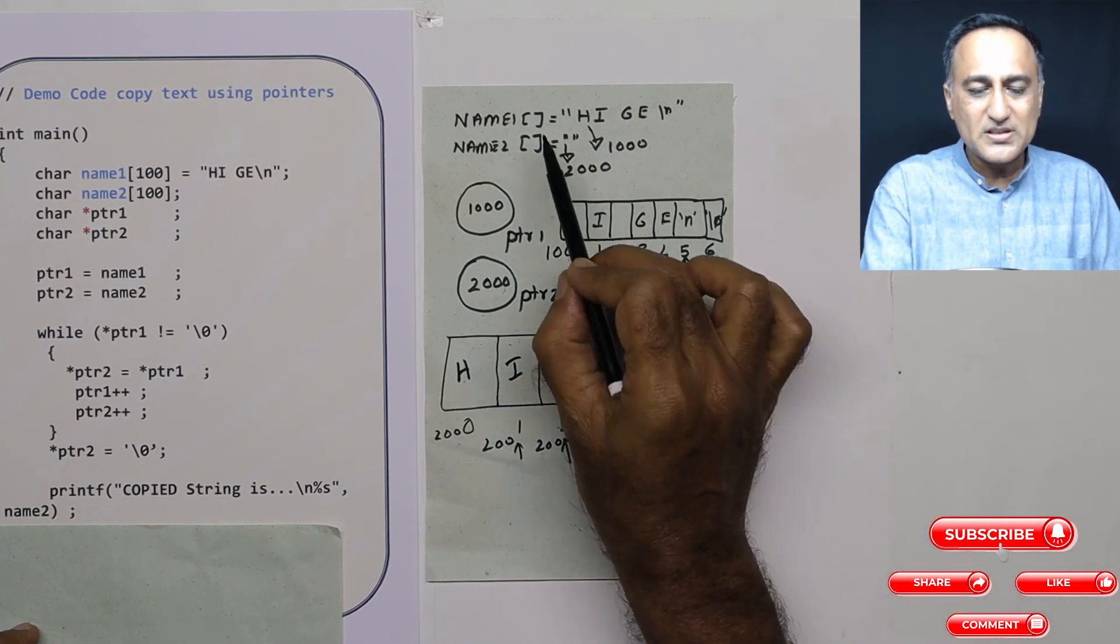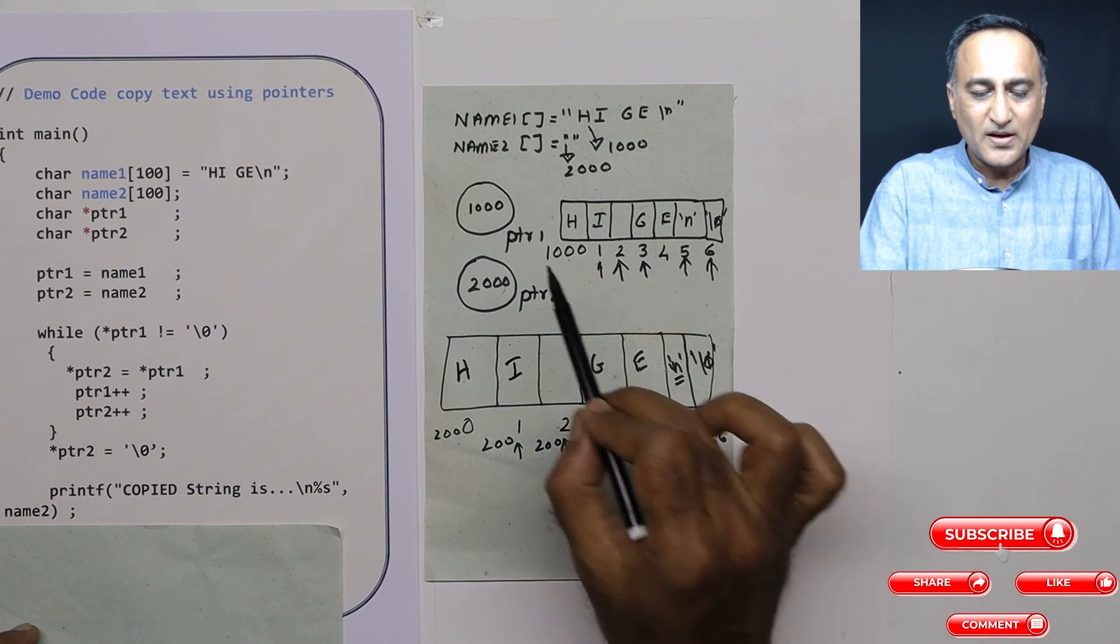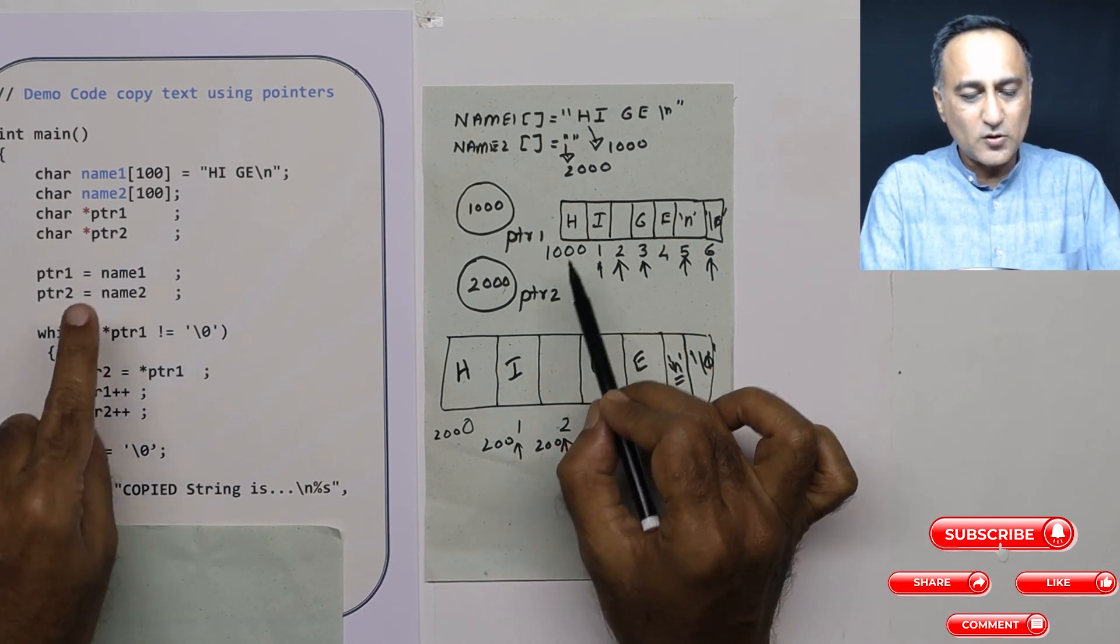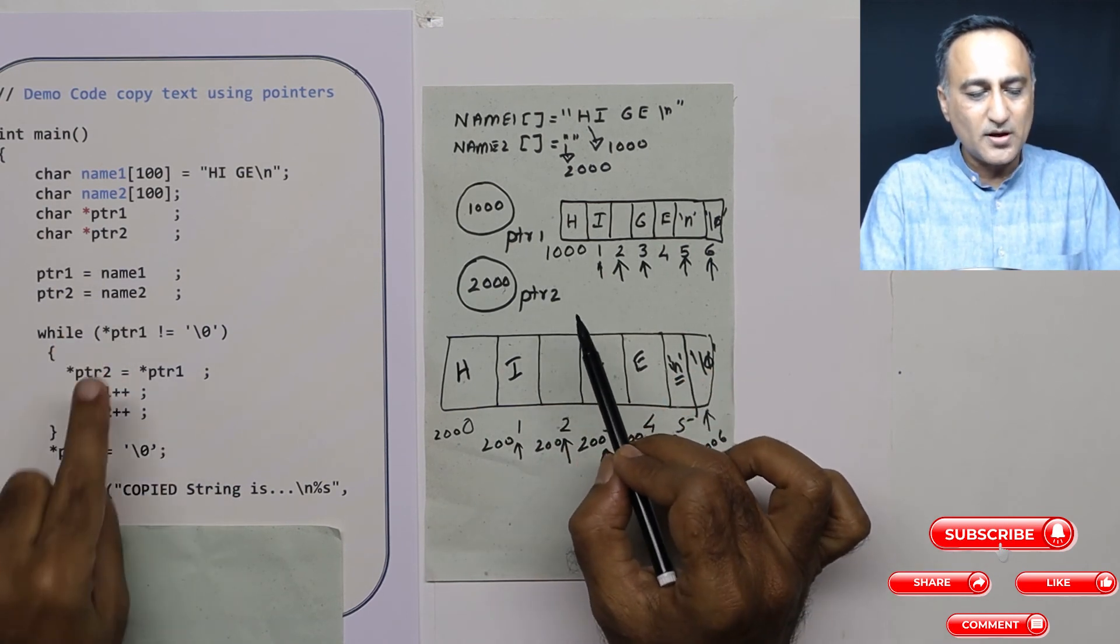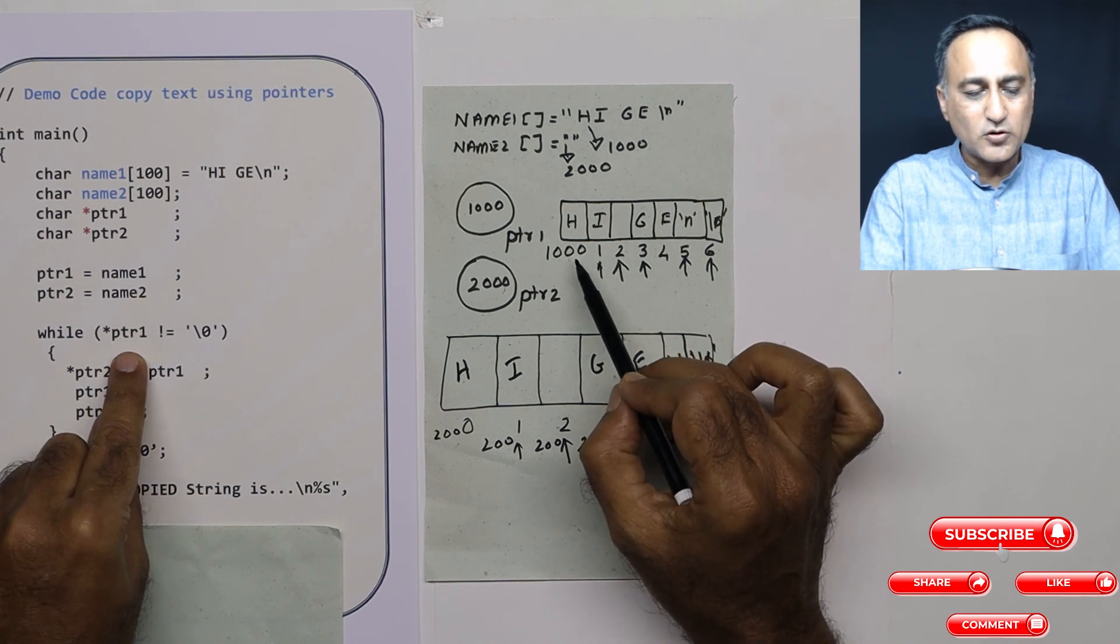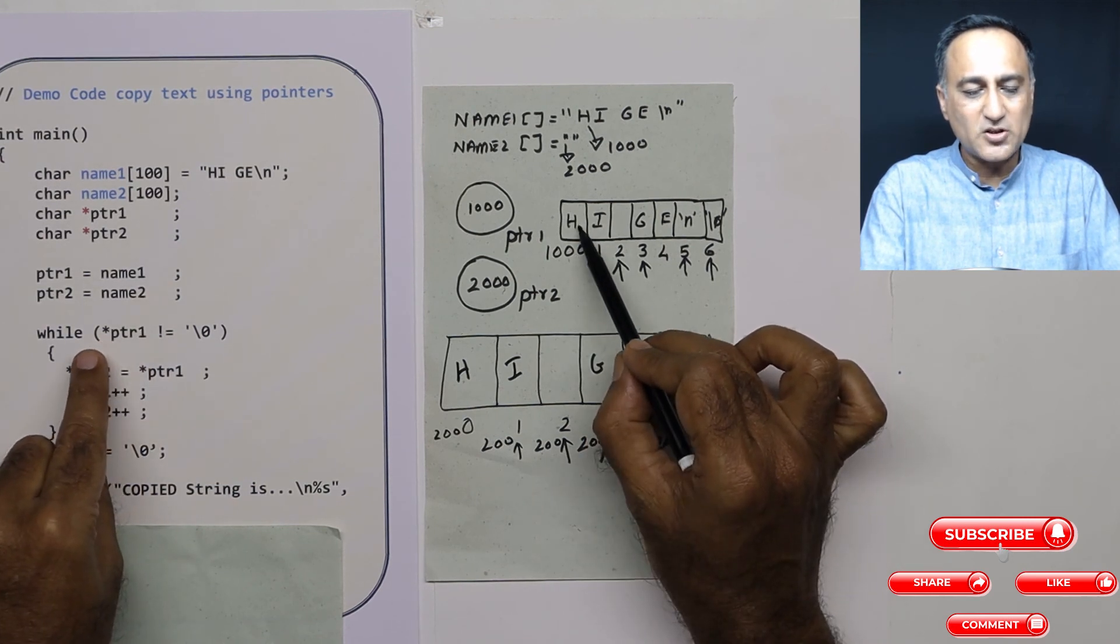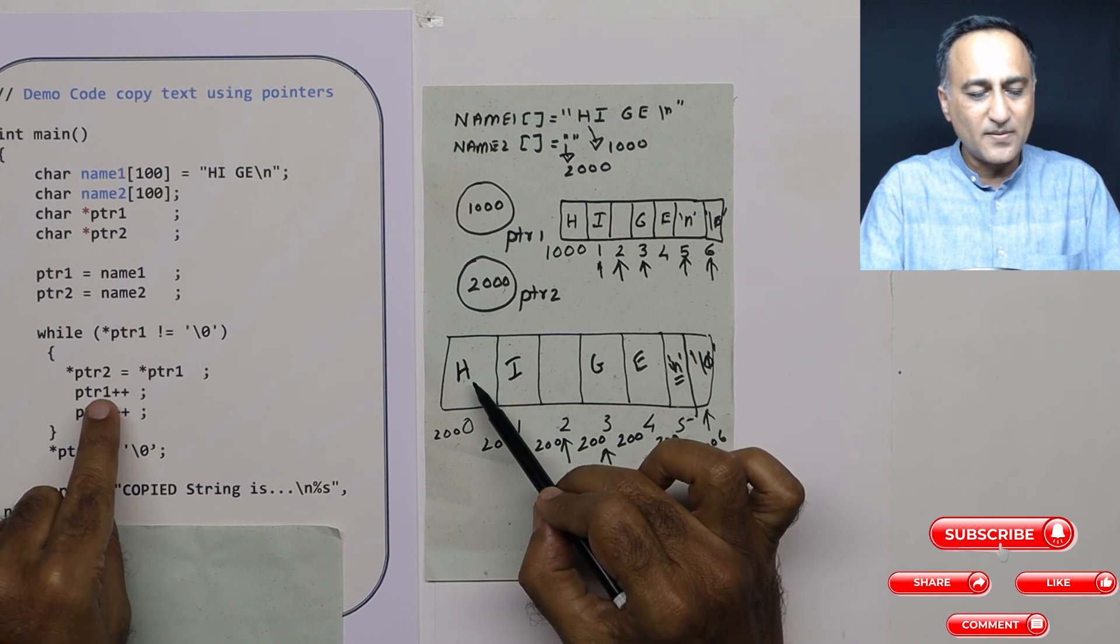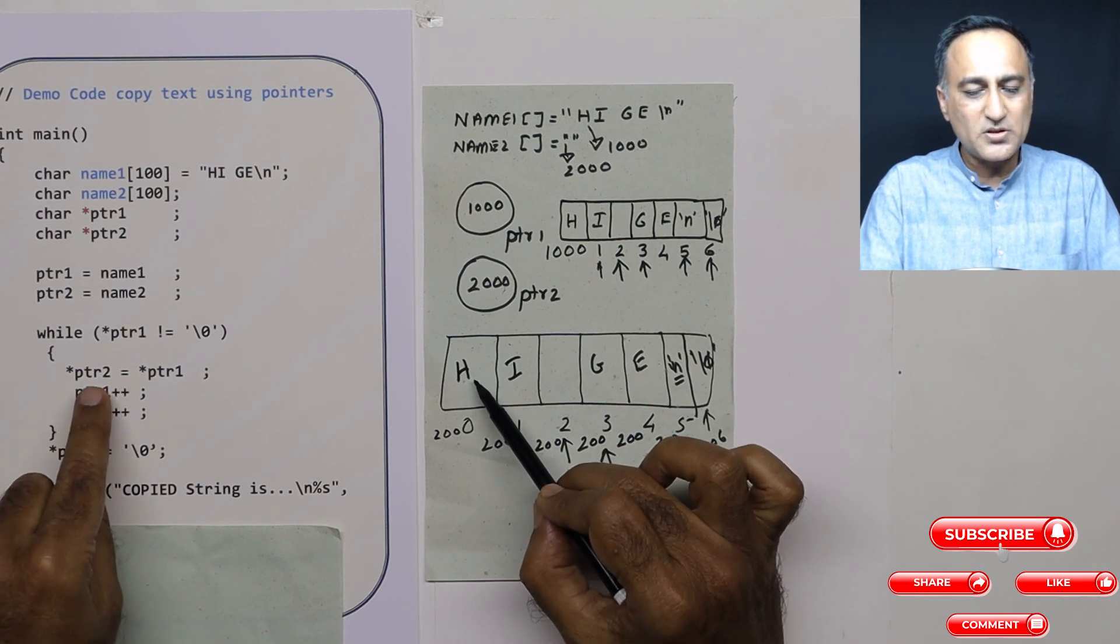What you need to do is: array1 is at 1000, array2 is at 2000. So ptr1 refers to address 1000, ptr2 refers to 2000. So ptr1 is referring to 1000, star ptr1 is referring to h. So when I say star ptr1, h is copied here to this star ptr2.